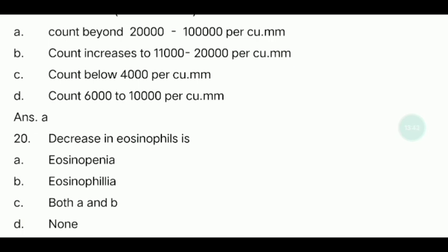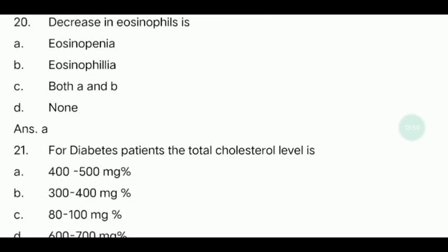Twenty-first question: For a diabetic patient, the total cholesterol level is? Diabetes and blood pressure are closely related — cholesterol increases automatically in the body, leading to atherosclerosis. The options are 400 to 500 milligrams percent, 300 to 400 milligrams percent, 8200 milligrams percent, or 600 to 700 milligrams percent. The answer is 400 to 500 milligrams percent.